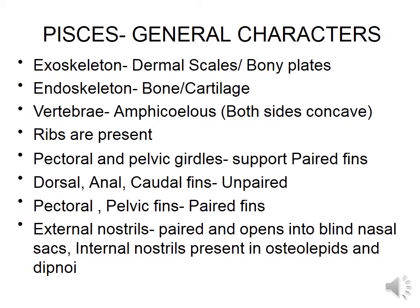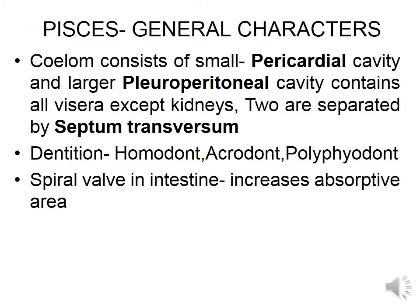External nostrils are paired and open into blind nasal sacs. Internal nostrils are present in osteolipids and the dipnoid group. The coelom consists of a small pericardial cavity and a larger pleuroperitoneal cavity containing all viscera except kidneys. These two are separated by the septum transversum.